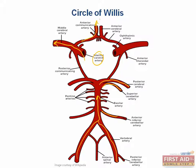Connecting the MCA to the PCA is the posterior communicating artery, and connecting both ACAs is the anterior communicating artery. And when you look at this, you see this circle that's formed, and that is the circle of Willis.